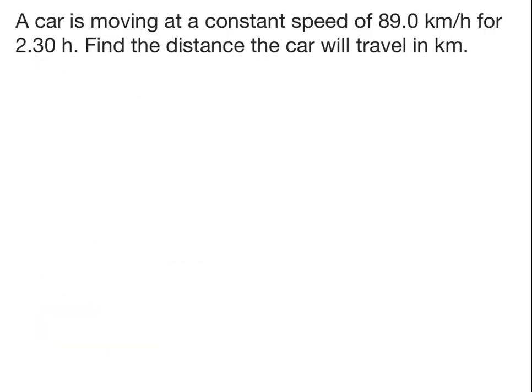A car is moving at a constant speed of 89.0 km per hour for 2.30 hours. Find the distance the car will travel in kilometers.